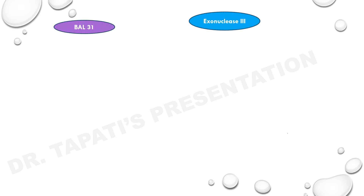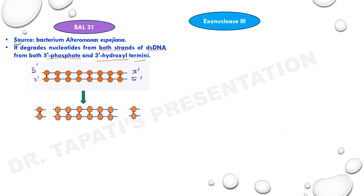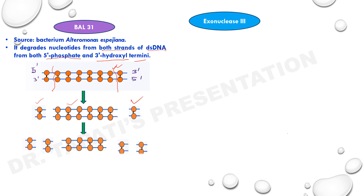Different types of exonucleases are available. The first example is BAL31, obtained from Alteromonas espejiana. It degrades nucleotides from both strands of double-stranded DNA from both the 5' phosphate and 3' hydroxyl termini. If you see this figure, the enzyme is acting on both terminal positions. After degradation, these are the fragments obtained, and in the next step, further fragments are produced due to the action of BAL31. Initially there were 8 nucleotides present; after BAL31 action, it is converted to 6 nucleotides, then to 4 nucleotides — meaning longer exposure time results in shorter DNA fragments.